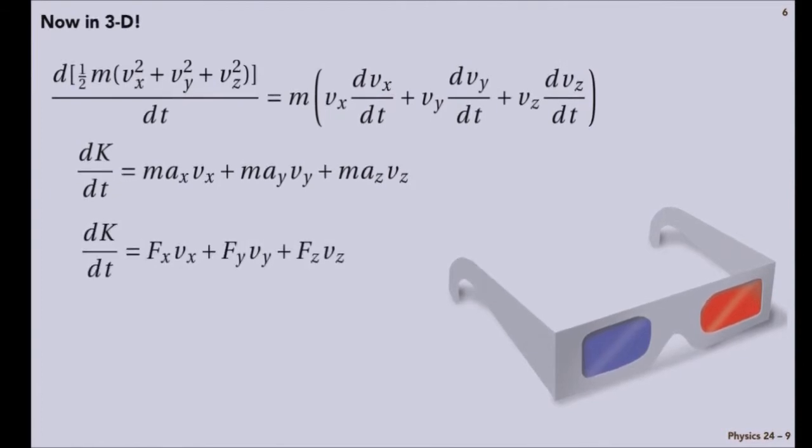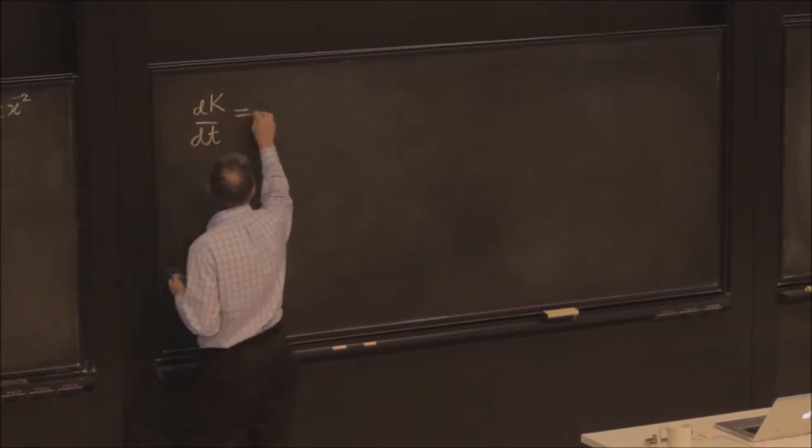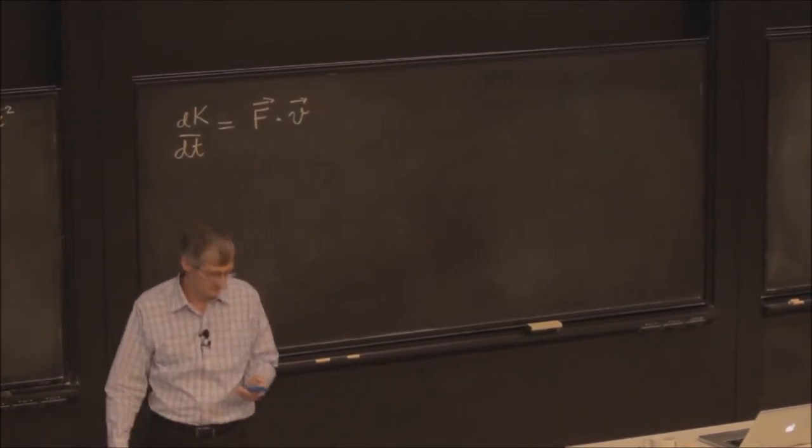And using the same trick, that is the force components in the Cartesian directions multiplied by the corresponding velocity components. How would you rewrite this thing, based on your extensive knowledge of linear algebra? Is that the dot product of F and v? So this is saying dK/dt is F dot v. Does that look right?